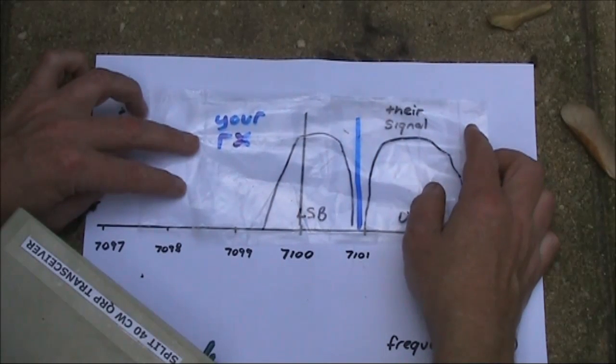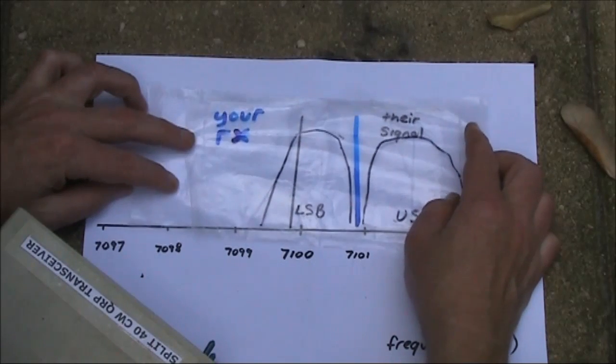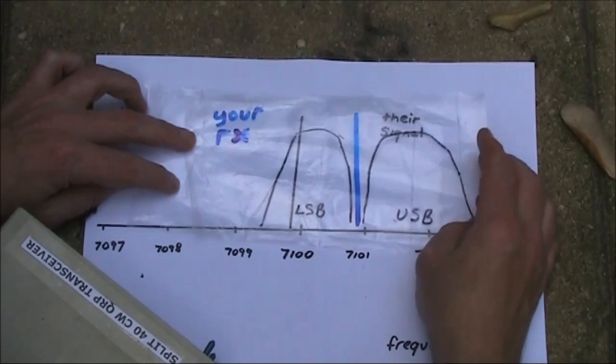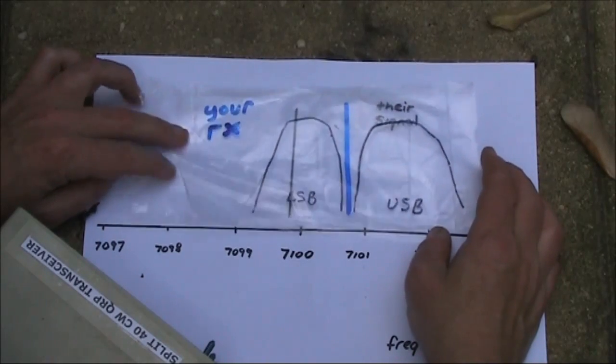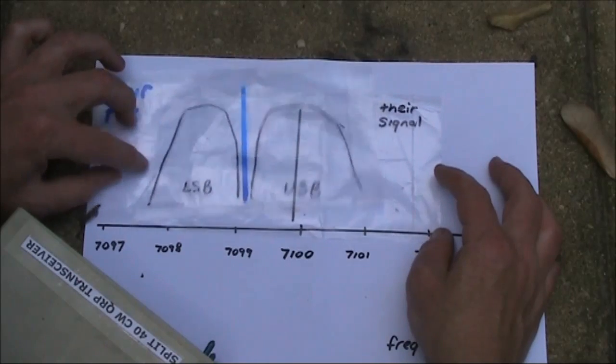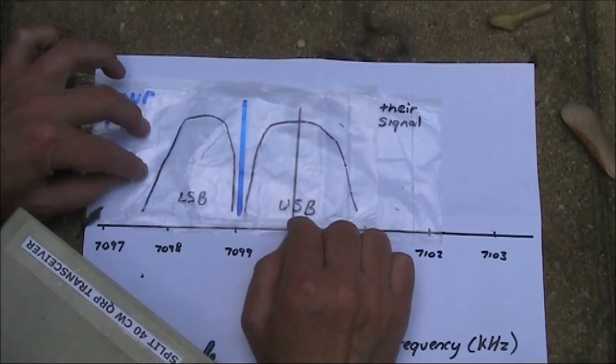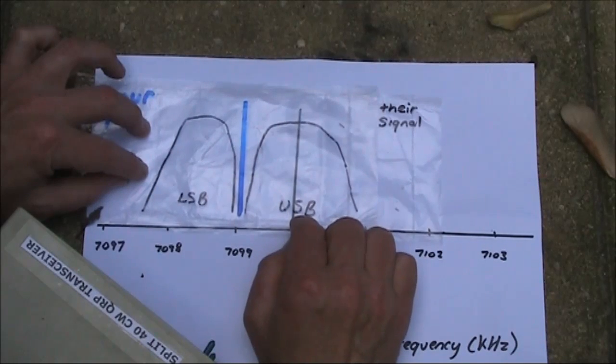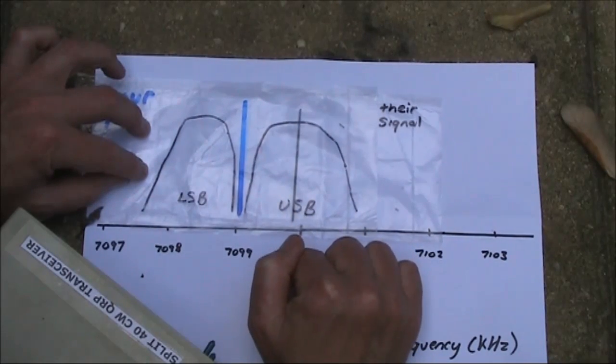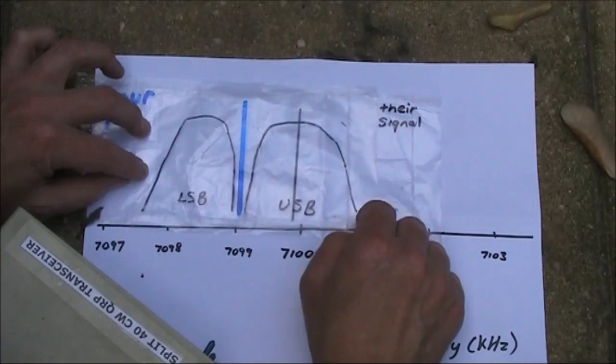But let's say you've still got a basic direct conversion receiver like this one here. Then the only way you can dodge the interference on 7102 is to move your own frequency down so that the center is below, and you've got your 600 to 800 Hz difference here, and you're able to hear the signal on 7.1 without interference from the one up on 7102 because of your audio filters bandpass.